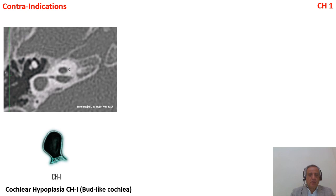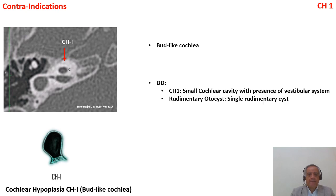Cochlear hypoplasia type 1 shows a vestibule but the cochlea is rudimentary — a very small cavity. Personally, I am not going to implant this condition because we don't have a short enough electrode. Some surgeons argue for doing it, but for me it is not a good indication. In cochlear hypoplasia type 1 — the bud-like form — you must differentiate it from rudimentary otocyst where there is no vestibule. There will also be a possible cochlear nerve deficiency.